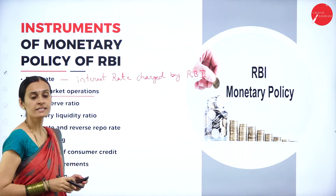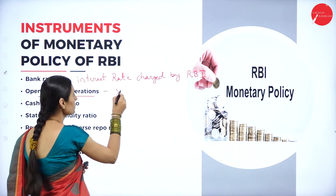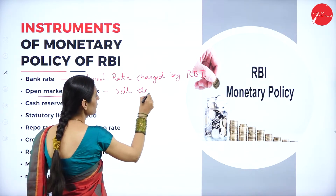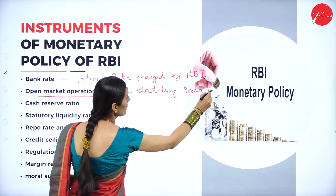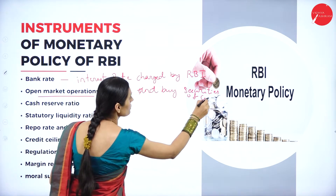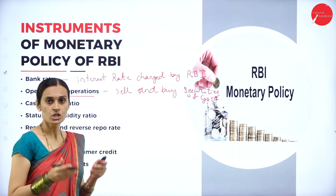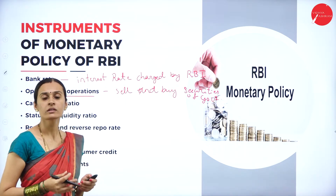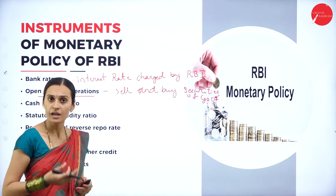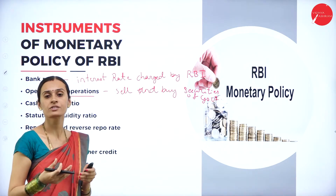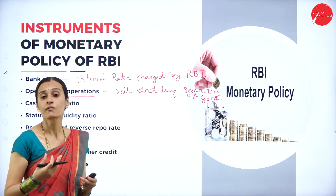The next instrument is open market operations. RBI plays a very important role as a banker to the government — it sells and buys government securities in the open market. This is considered open market operations. When the government is in financial crisis conditions, RBI has power to sell or buy government securities, and also purchase securities from the public, which creates the flow of credit.